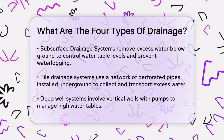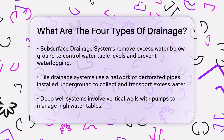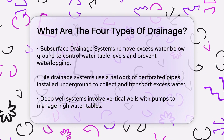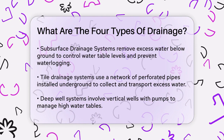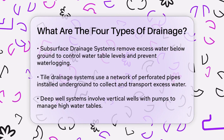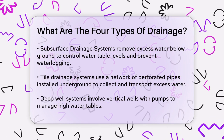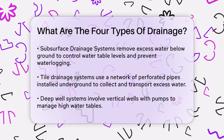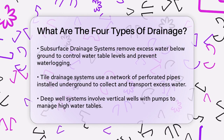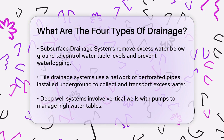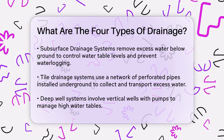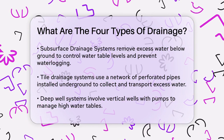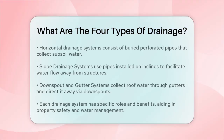The slope drainage system is another important type. This system allows water to flow downward from a structure with the aid of pipes moving down a slope. A pipe is installed and anchored into a small incline, causing water to flow through the pipe and away from the structure. This is particularly useful for areas where gravity can help in water flow.